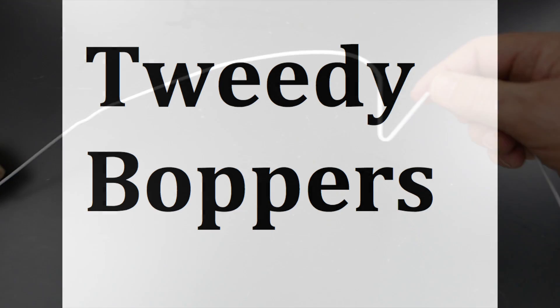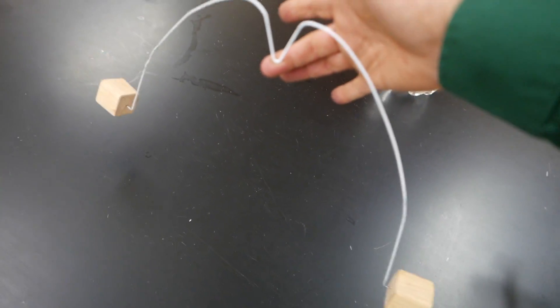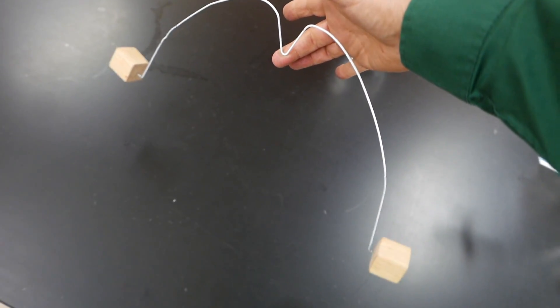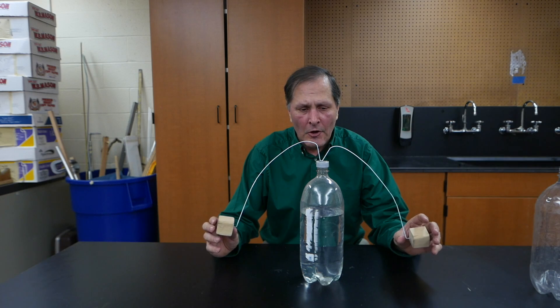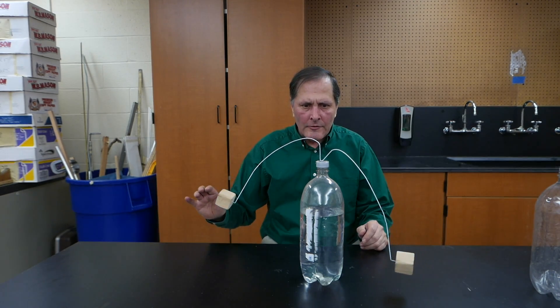First up are my Tweety Boppers. Two blocks of wood and a coat hanger bent to the shape to support it in the center. I can simply balance it on top of the soda bottle as we see here. I can get it to rock back and forth.